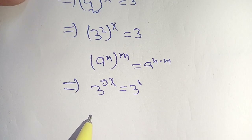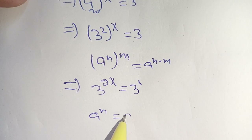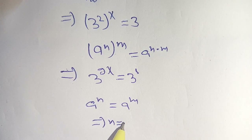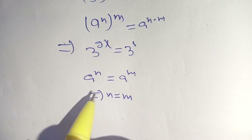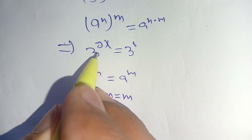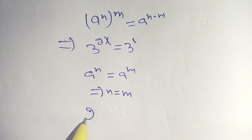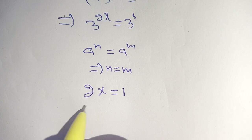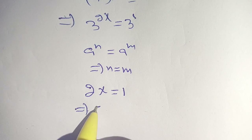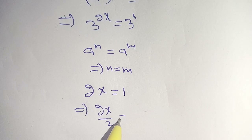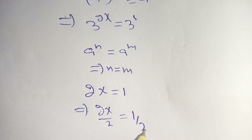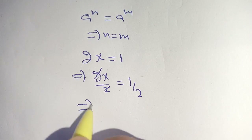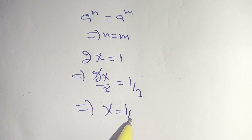It is now in the form a raised to the power n equals a raised to the power m, which implies n equals m. So we can compare the exponents: 2x is equal to 1. Dividing both sides by 2, the 2s cancel out and we get x is equal to 1 divided by 2.